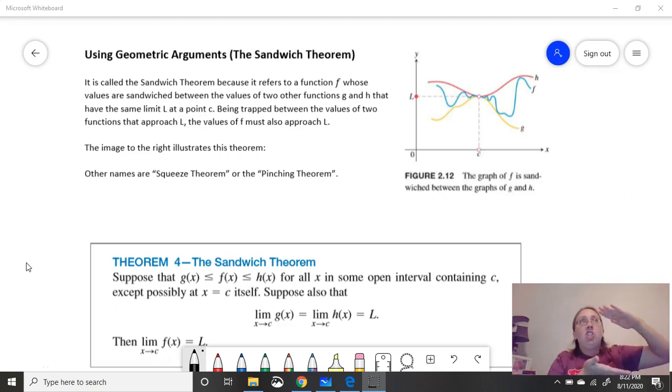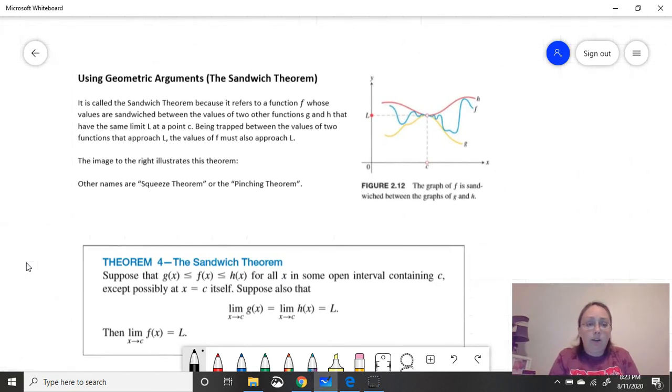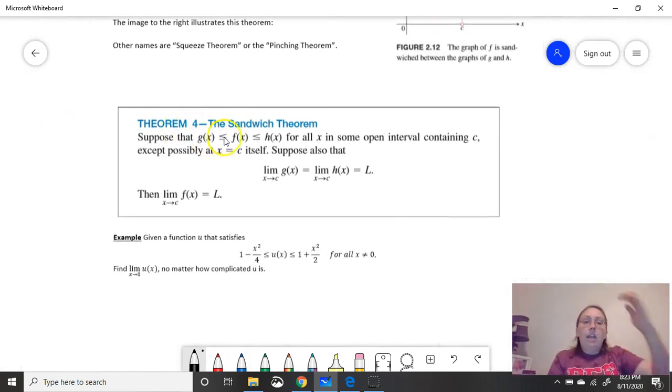So your function h and your function g are doing that to your function f that you really want to know about. But h and g are much more simple or easy to understand, easier to interpret. We can find the limit of those two functions. But because your function is stuck in between, whatever h and g approach, whatever their limit is, because your function is stuck in between, it also has to approach that limit. So we can write this theorem out in a nice way. If your function f is stuck in between, it's bigger than function g but smaller than function h, it's stuck in between for all x's around the x you're trying to approach.